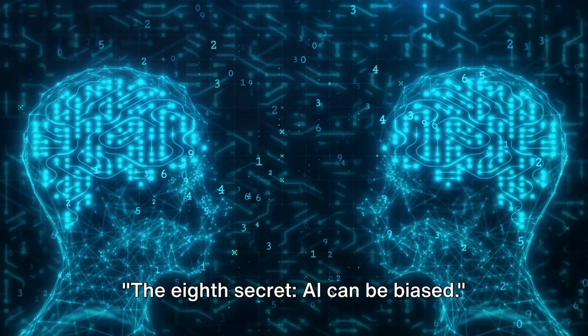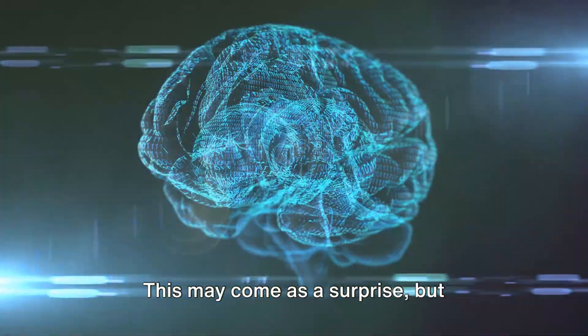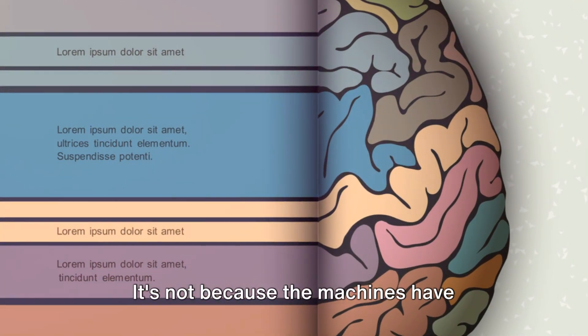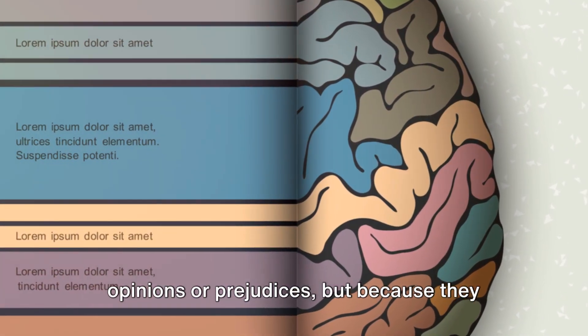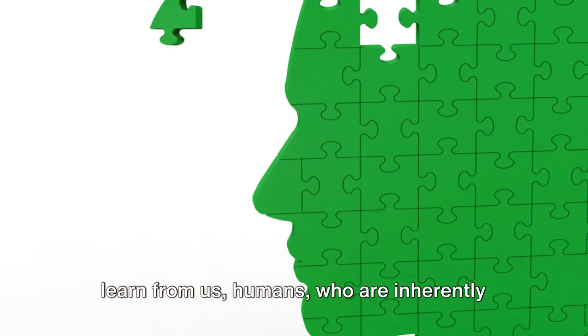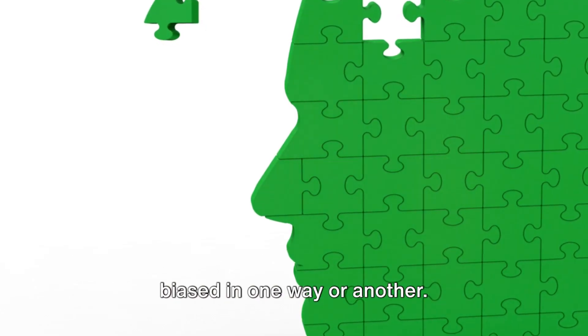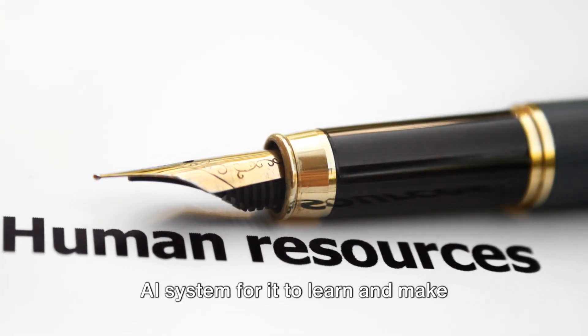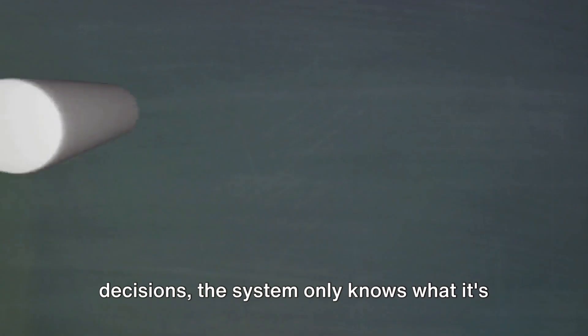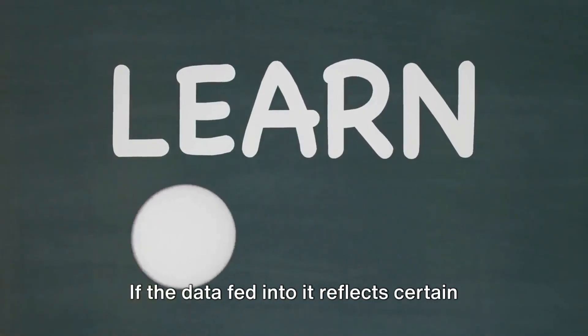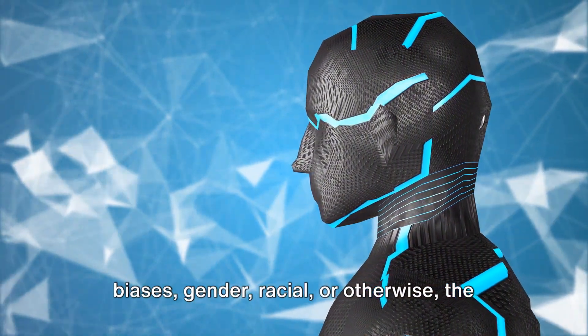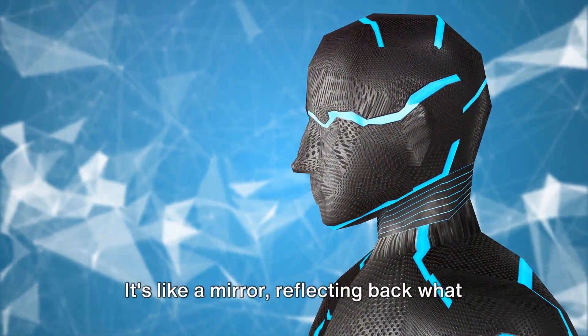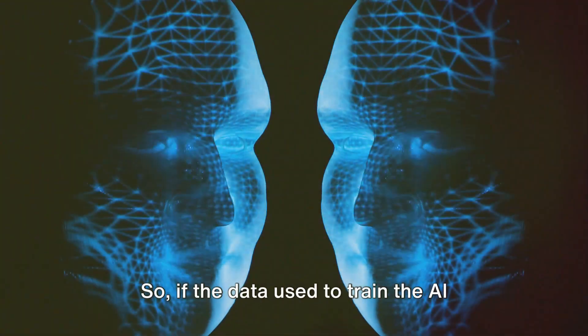The eighth secret, AI can be biased. This may come as a surprise, but artificial intelligence is not immune to bias. It's not because the machines have opinions or prejudices, but because they learn from us, humans, who are inherently biased in one way or another. Consider this. When we feed data into an AI system for it to learn and make decisions, the system only knows what it's been told. If the data fed into it reflects certain biases, gender, racial or otherwise, the AI will learn these biases too. It's like a mirror, reflecting back what it sees.